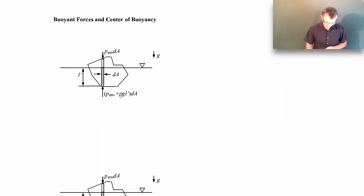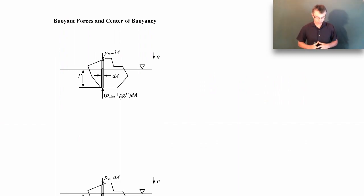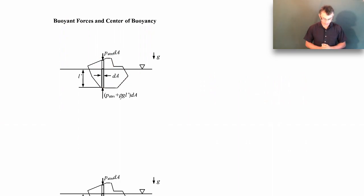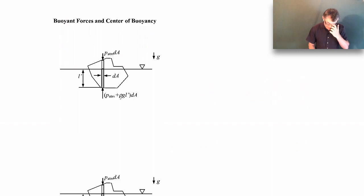The first thing we're going to do is derive what a buoyant force is. You probably know something about buoyant forces from Archimedes' principle, but we're going to derive it so you can see really where it comes from. We're going to say we have some irregularly shaped object, partially submerged as shown in the picture, with the free surface here and gravity pointing downward. We'll assume the fluid is incompressible, and we'll take a very narrow cylinder of the object and balance the pressure forces acting on it.